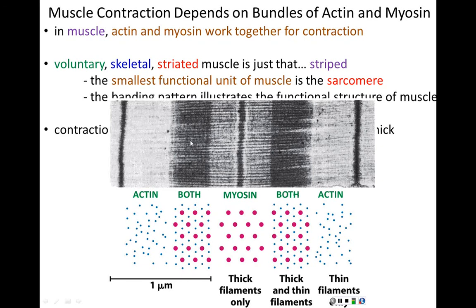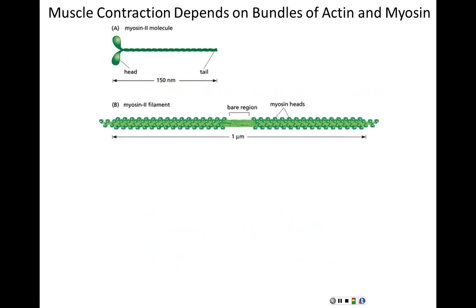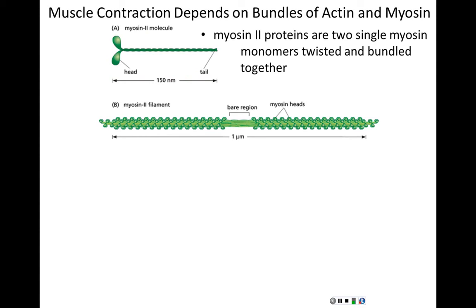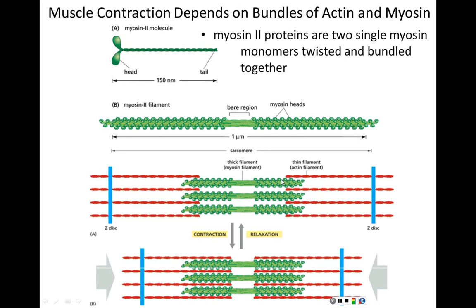A single myosin-2 protein is actually composed of two individual myosin monomers that have been bundled and twisted together. The thick filament is made of many, many myosin-2 molecules bundled together. Each of these blips is a myosin-2, and they have been braided and interlocked together to make this thick filament. The thick filament is in the center of the sarcomere, made up of many myosin-2 molecules.